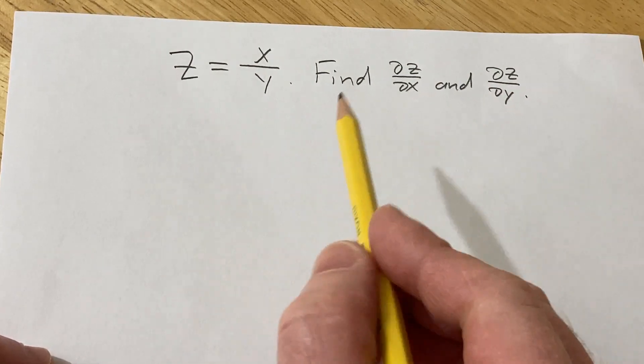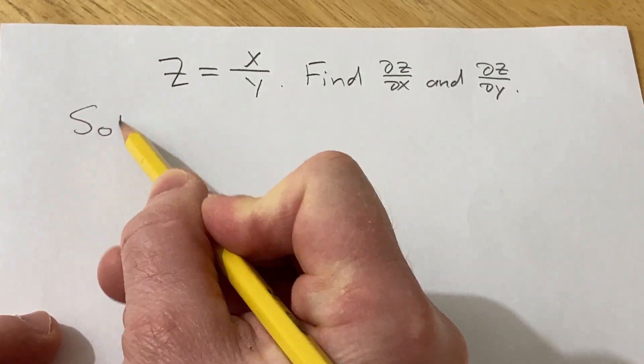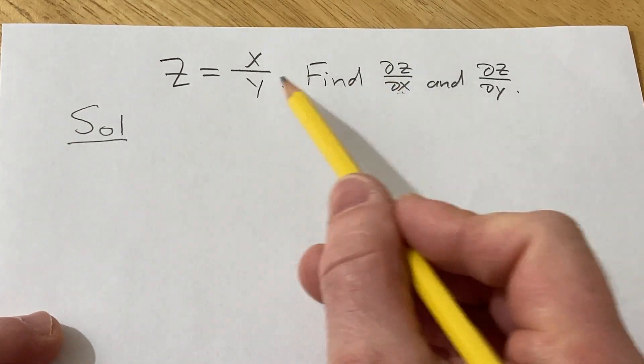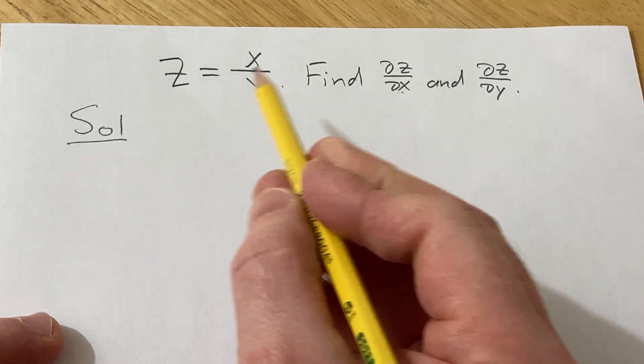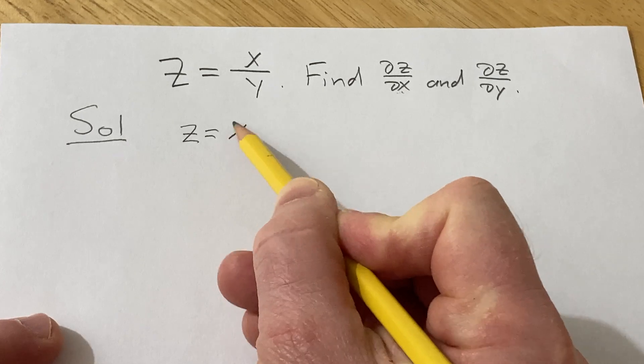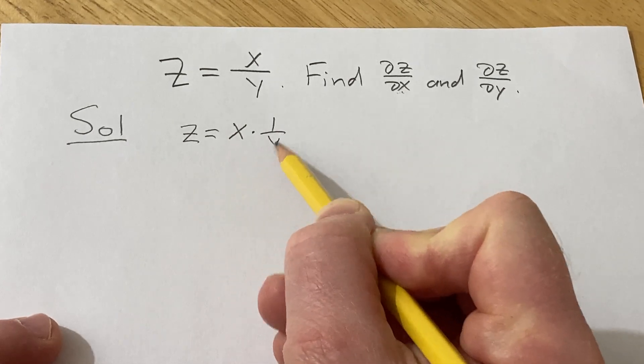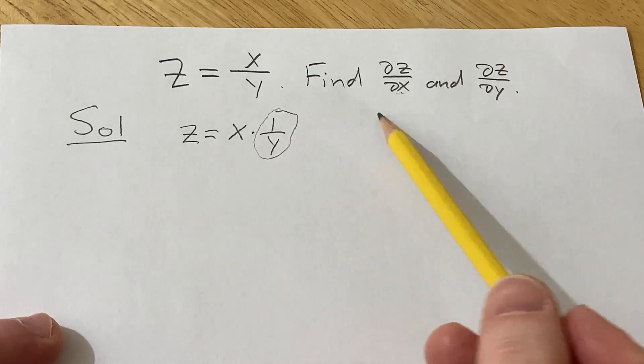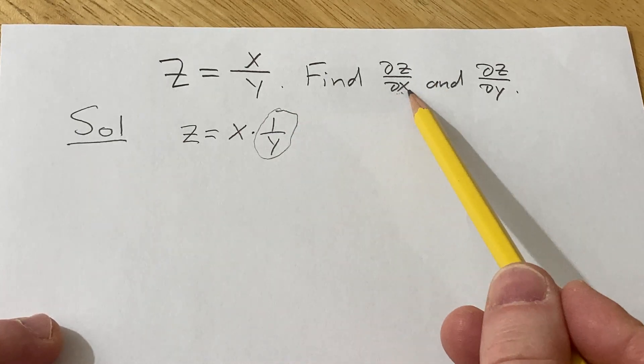So let's go ahead and work through it very carefully. When we're looking for del z del x, we want to treat all the other variables as constants. So it might be beneficial to rewrite z as follows, it's really x times 1 over y. And so we're basically treating all of this as a constant when we go through the process of finding del z del x.